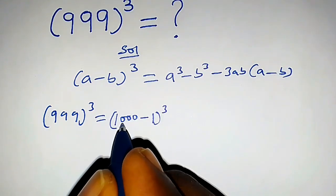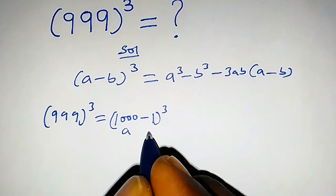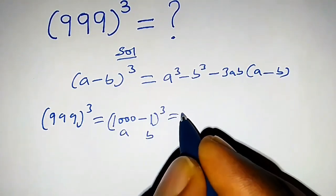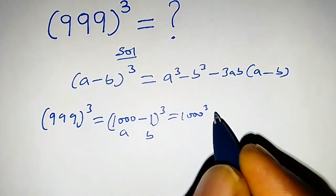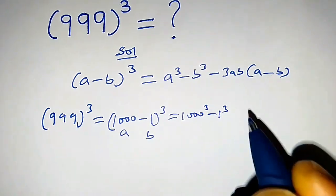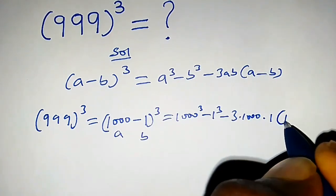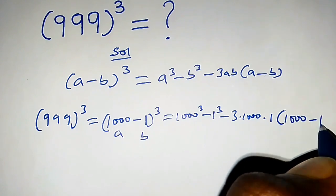You will observe that a is 1000 and b is 1 by comparing this with the formula. So this equals 1000 raised to the power 3 minus 1 cubed minus 3 times 1000 times 1 into 1000 minus 1.